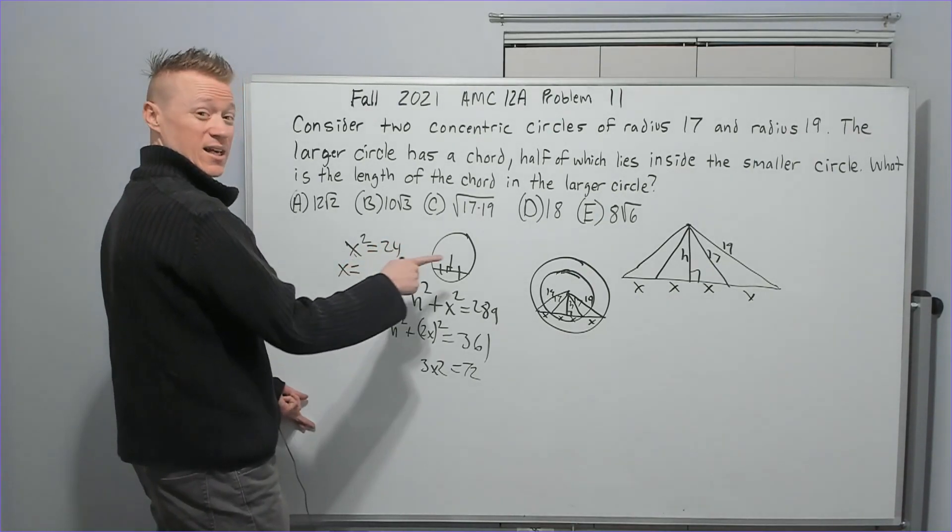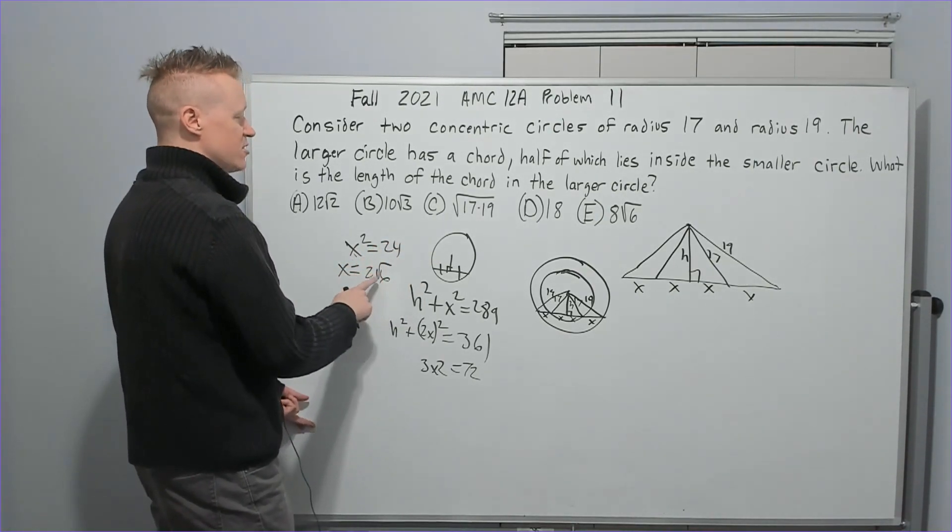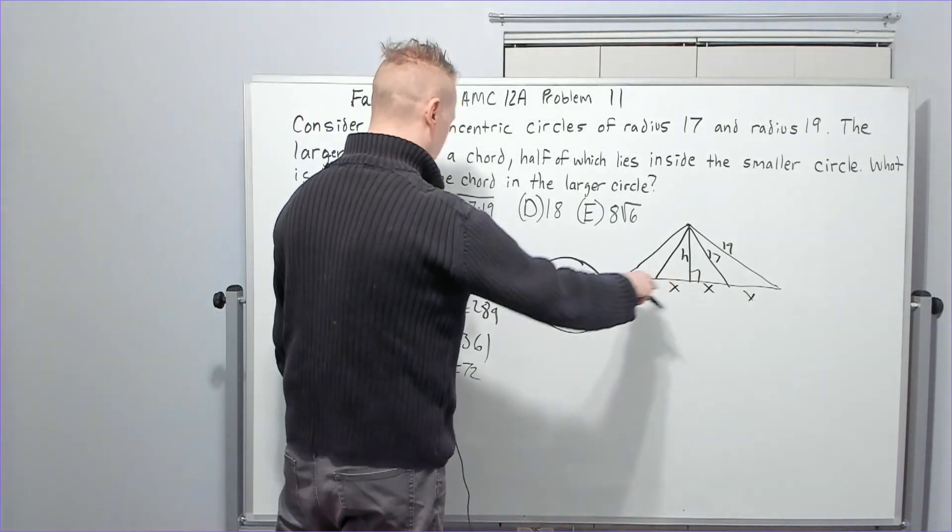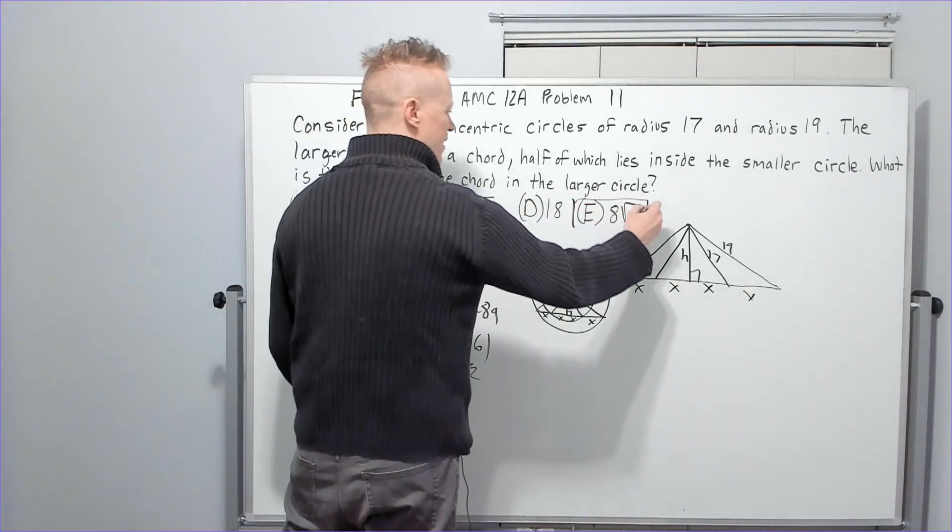Add 11, add 61, get 72, divide by 3, X squared equals 24. Square root to get 4 times 6, 2 root 6. 2 root 6 is X, the chord is 4X, 4 times 2 root 6, 8 root 6, done.